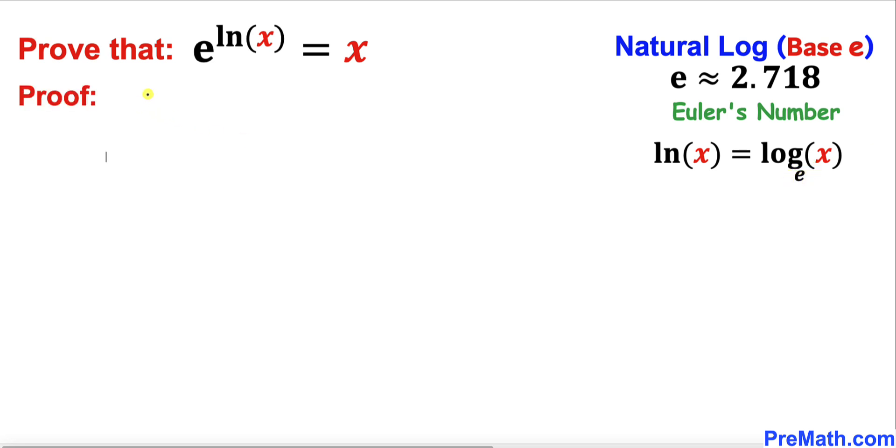Here's our proof. Our proof is going to be by contradiction. So let's suppose that this left-hand side is not equal to x, but rather e to the power of natural log of x equals y, where x and y are two different things. Now let's go ahead and take a natural log on both sides of this equation.